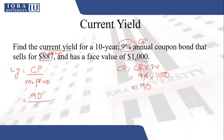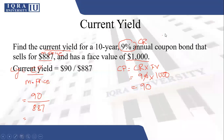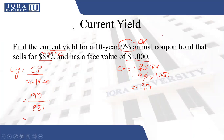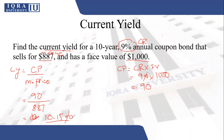Now divide the coupon payment of 90 by the market price of 887. Solving this gives a current yield of 10.15%. So the investor will get a current yield of 10.15% if he purchases this bond at 887. Again, this is not the total return the investor will get — it is just the current, immediate return.